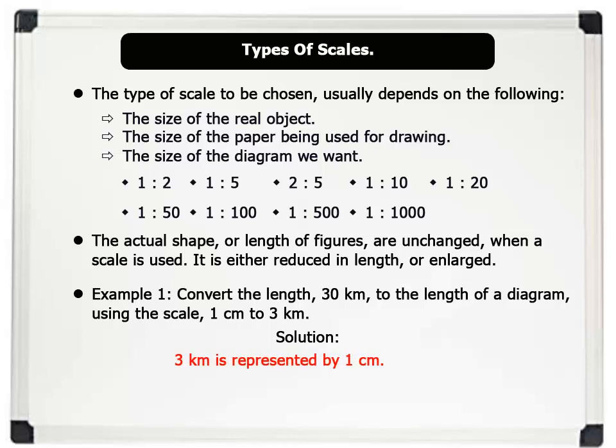3 kilometers is represented by 1 centimeter. So, 30 kilometers will be represented by 30 divided by 3 times 1 centimeter. Therefore, the length on paper is 10 centimeters. That's very good.